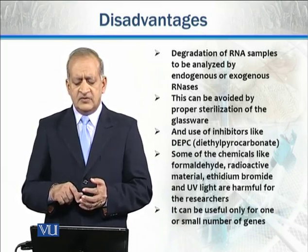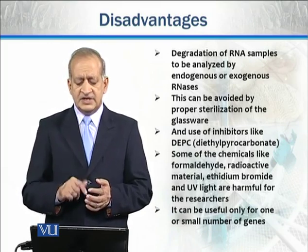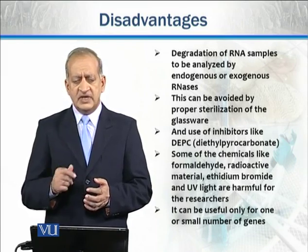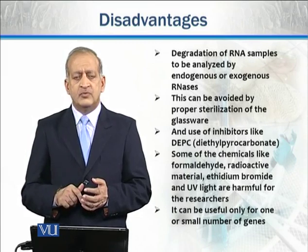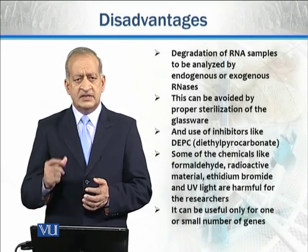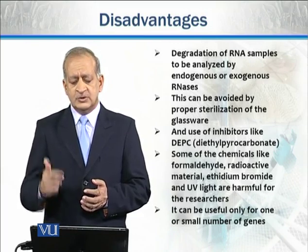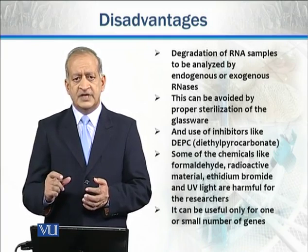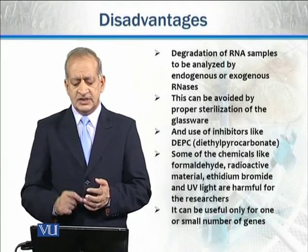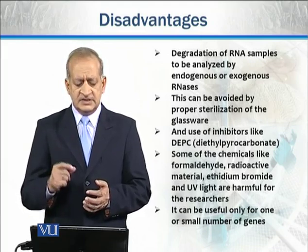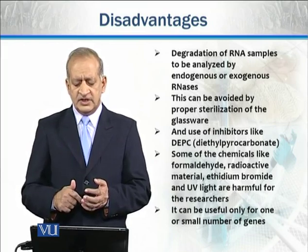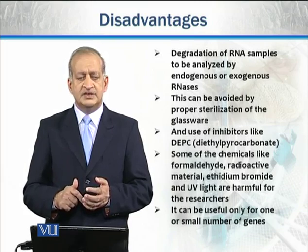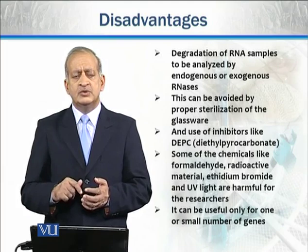Some of the chemicals used during northern blotting, like formaldehyde, radioactive isotopes, and ethidium bromide, are harmful to researchers. Additionally, northern blotting can only be useful for one or a small number of genes, which is another limitation of this technique.